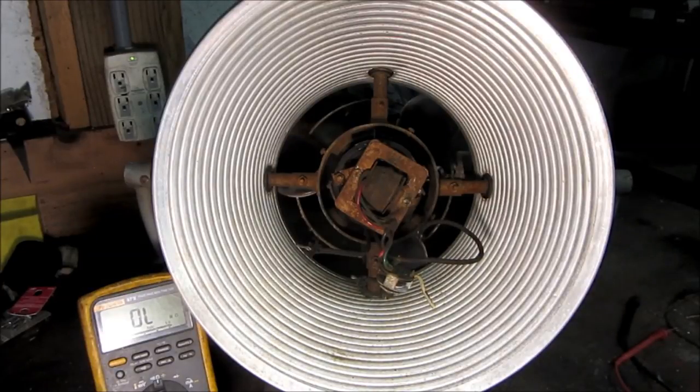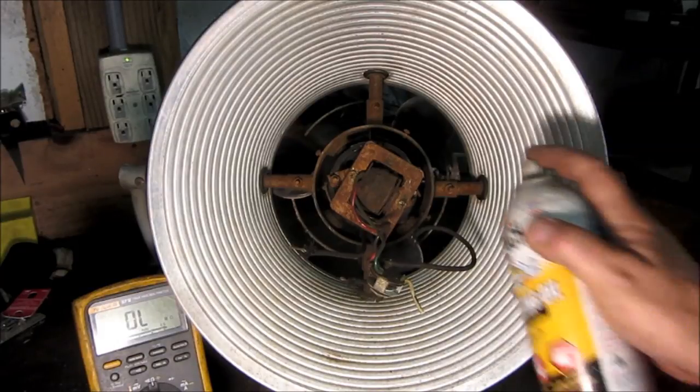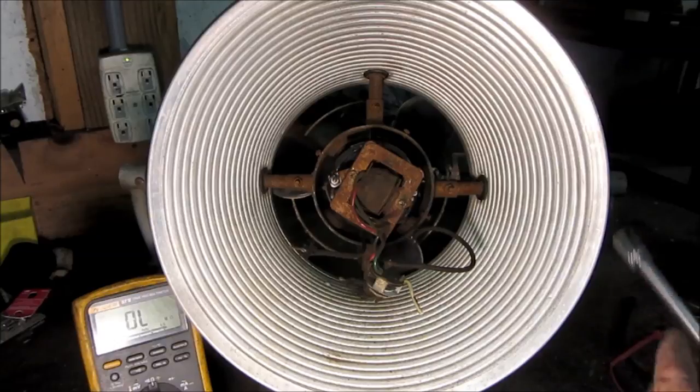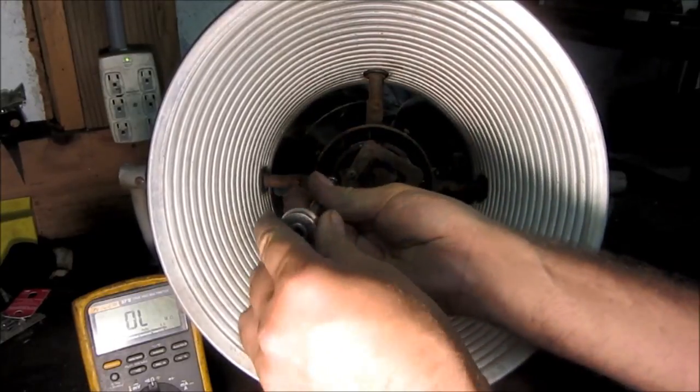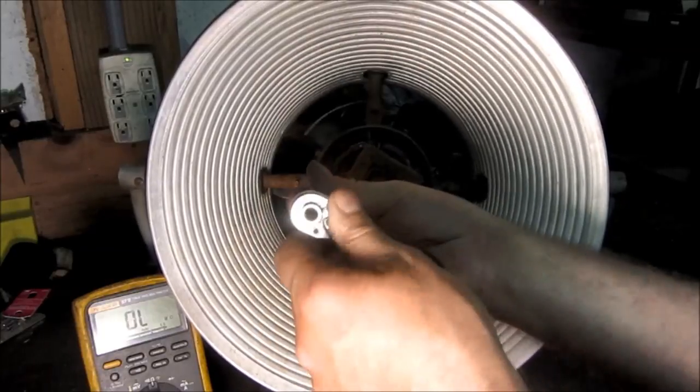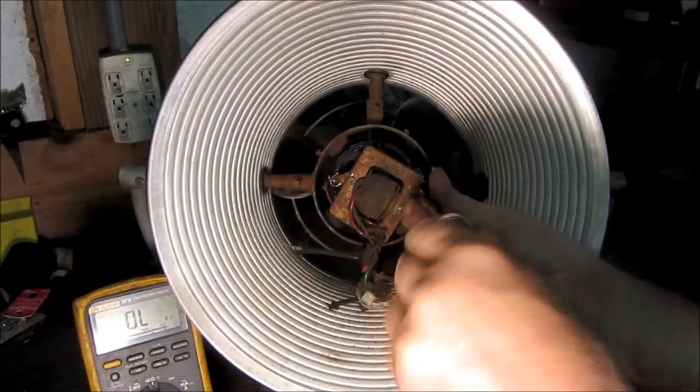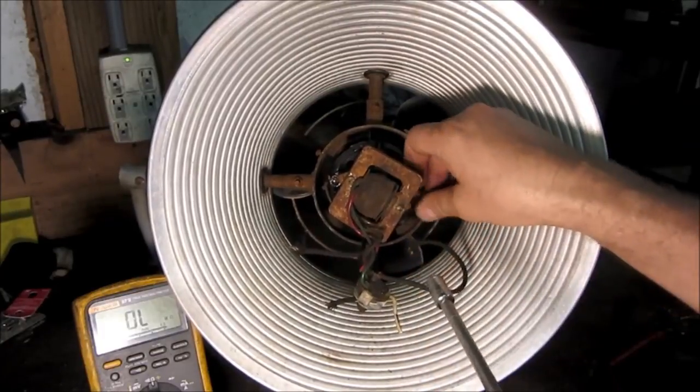Start with a little penetrating oil. This thing looks like it's seen some moisture to get the speed coil off if and when I manage to get this working.